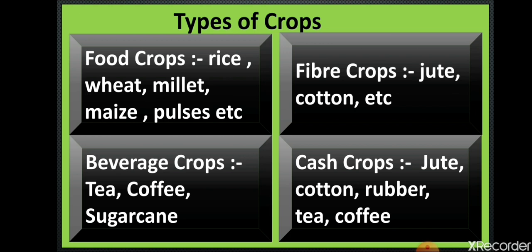Examples of food crops are rice, wheat, millet, maize, pulses, oil seeds, and spices. The next type is beverage crops — the crops that we consume in drinking form. In that category we are going to learn about tea, coffee, and sugarcane.